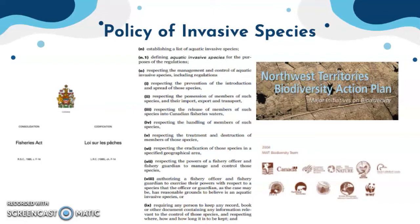In Regulations Section 43.1, which allows the Governor in Council to make regulations for carrying out the purposes and provisions of the act, there is a part mentioning aquatic invasive species — specifically respecting the management and control of aquatic invasive species. This includes regulations about prevention, possession, release, handling, treatment, and eradication of such species, as well as the powers of a fishery officer and fishery guardian. My understanding is that this gives power to the local or provincial and territorial governments to create an identification and management plan for invasive species.